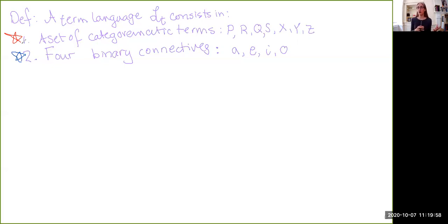So one term language might talk about cats, dogs, mammals, etc. Another categoromatic language might talk about running, sleeping, eating, reading, etc.